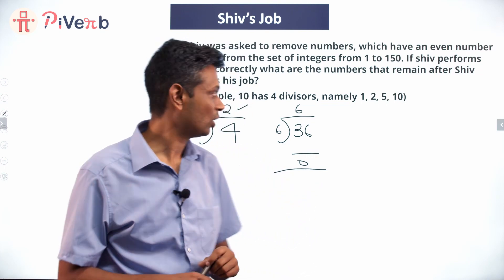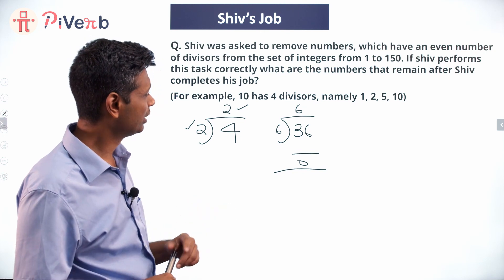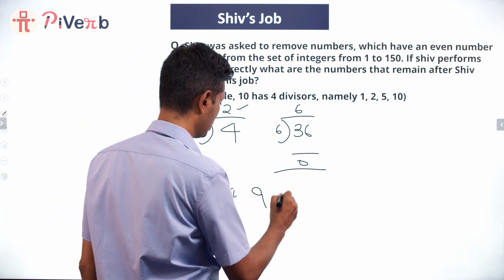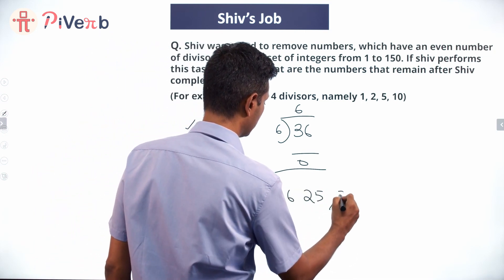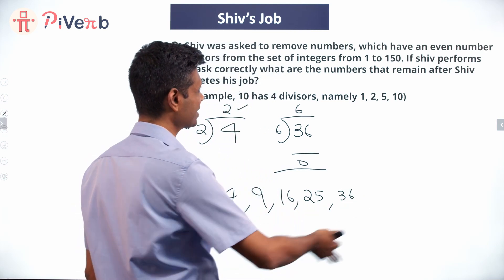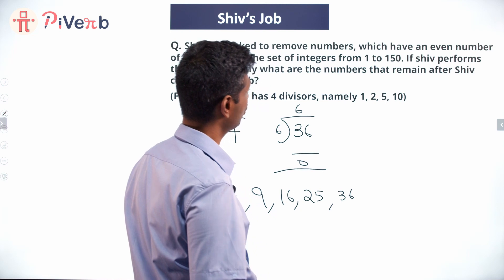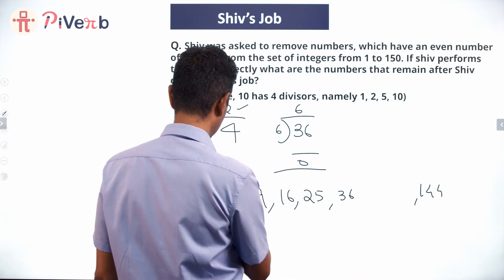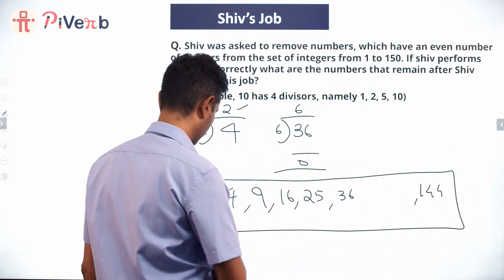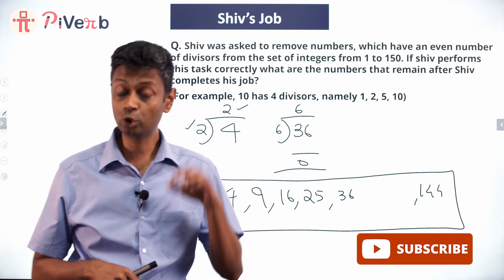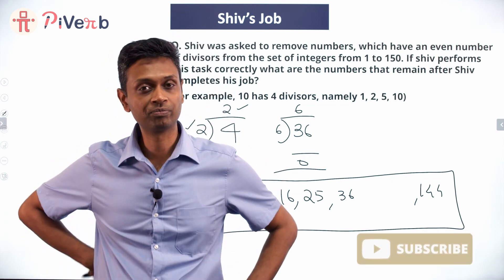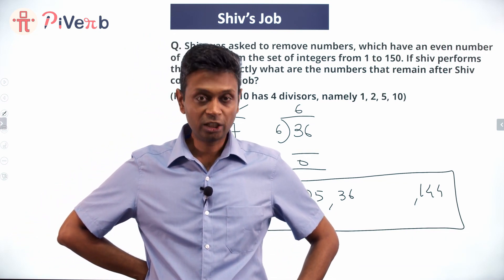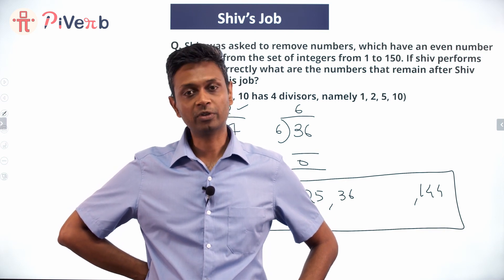So when Shiv removes all numbers with an even number of factors, he will have only perfect squares remaining: 1, 4, 9, 16, 25, 36, etc. What is the last perfect square up to 150? 10²=100, 11²=121, 12²=144 — those all qualify. 13²=169, which is greater than 150. So there will be 12 numbers on this list, from 1² to 12². The question is essentially: list all perfect squares from 1 to 150.